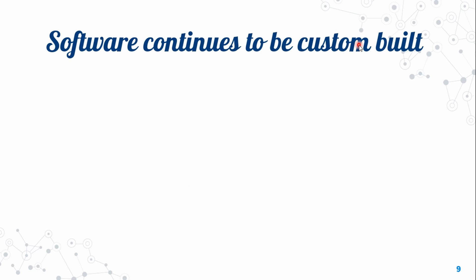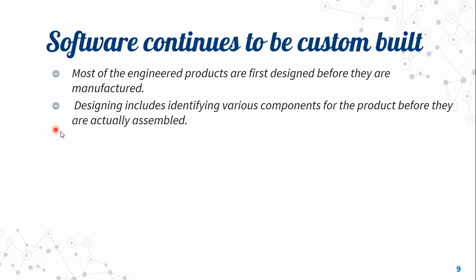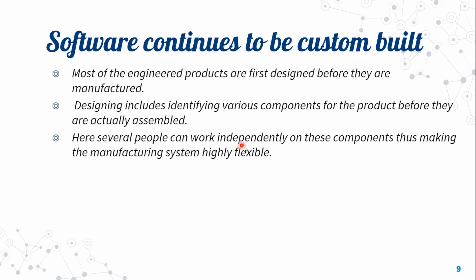Software continues to be custom built. Most engineered products are first designed before they are manufactured. Designing includes identifying various components for the product before they are actually assembled. Several people can work independently on these components, making the manufacturing system highly flexible.